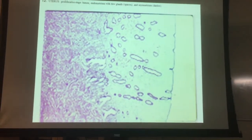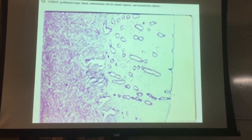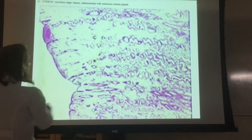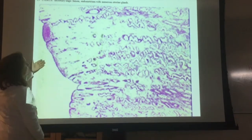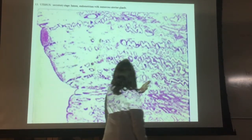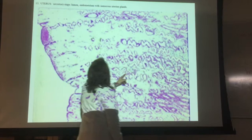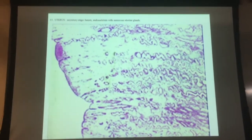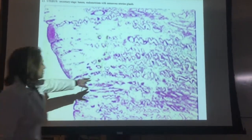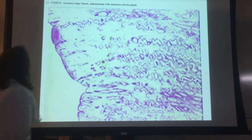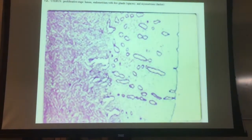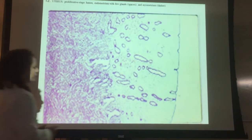When a woman menstruates, the first thing she sees is not blood but tissue. The lumen is over here and you can see the whole endometrium with a lot of uterine glands in here, and there are also blood vessels in there. These parts are the glands. This is the secretory stage versus here, the proliferative stage.